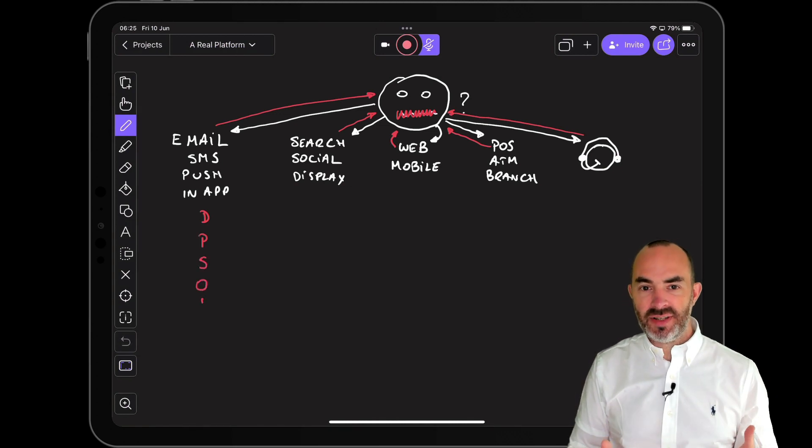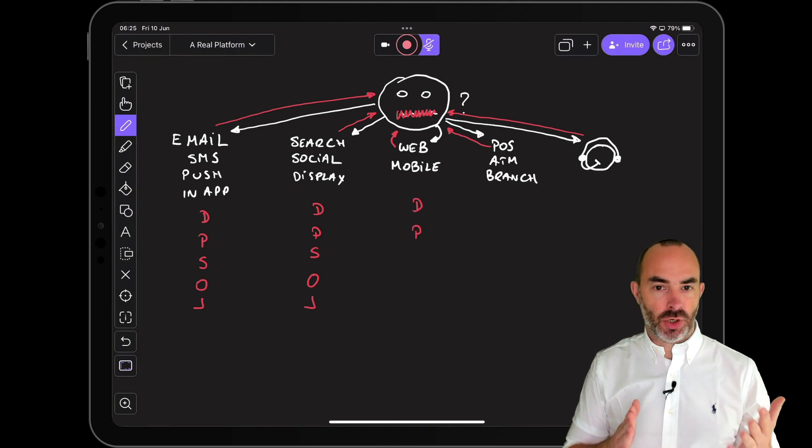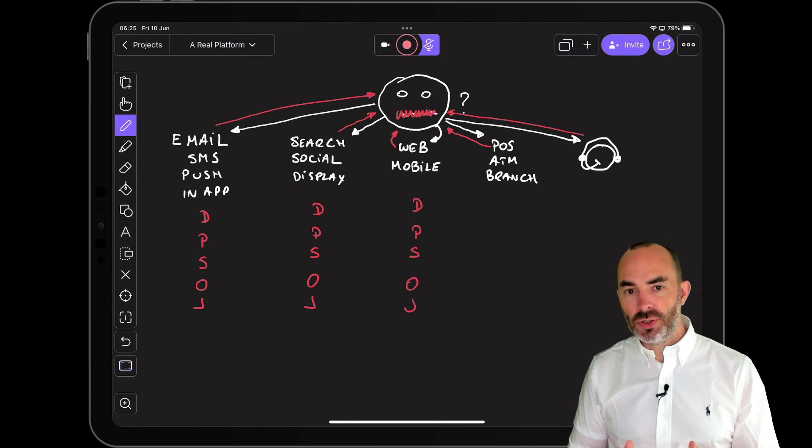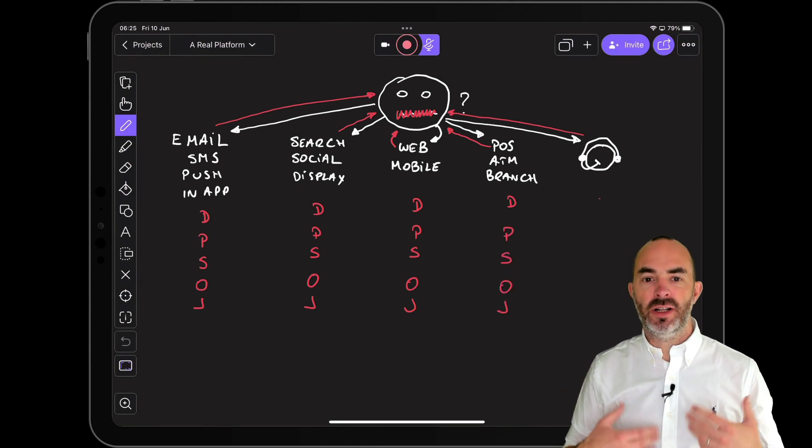The ecosystem of applications that you and your organization are using is very complex and has grown in silos over time. Each application you use has its own database, its own profile store, its own definition of a segment, its own definition of an offer, and its own definition of a journey.